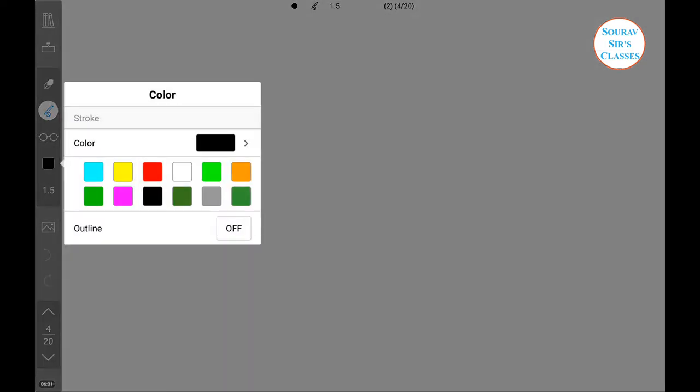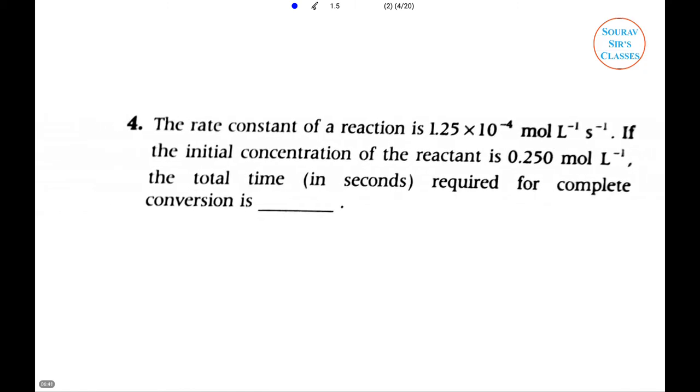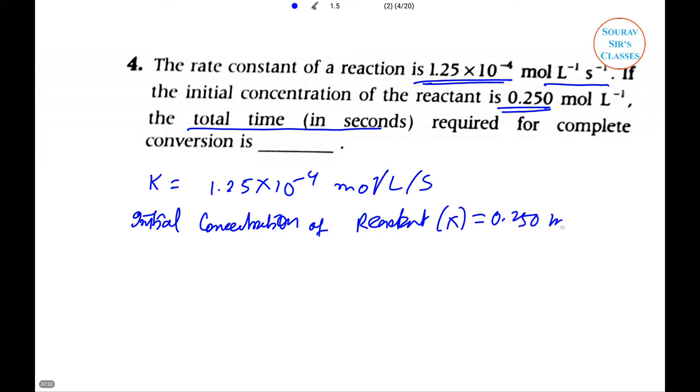The rate constant of a reaction is 1.25 × 10^-4 mol/L/s. If the initial concentration of the reactant is 0.250 mol/L, what is the total time in seconds required for completion of the conversion? The rate constant k equals 1.25 × 10^-4 mol per liter per second, and the initial concentration is 0.250 mol/L.